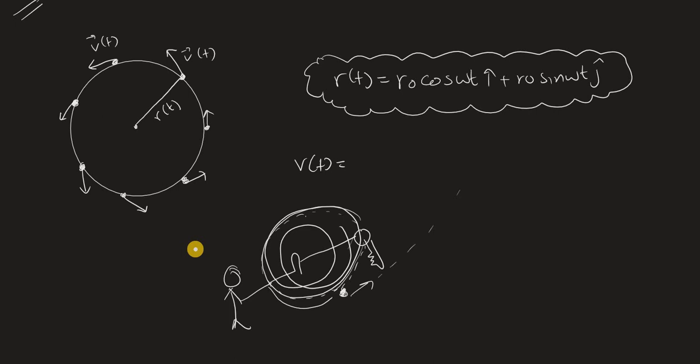This shows that the velocity vector is pointing tangentially to the circle. You can understand it using Newton's first law: an object continues moving in a straight line unless acted upon by an external force. When you release the key, with no external force, it moves in the direction it had at that instant — tangent to the circle.